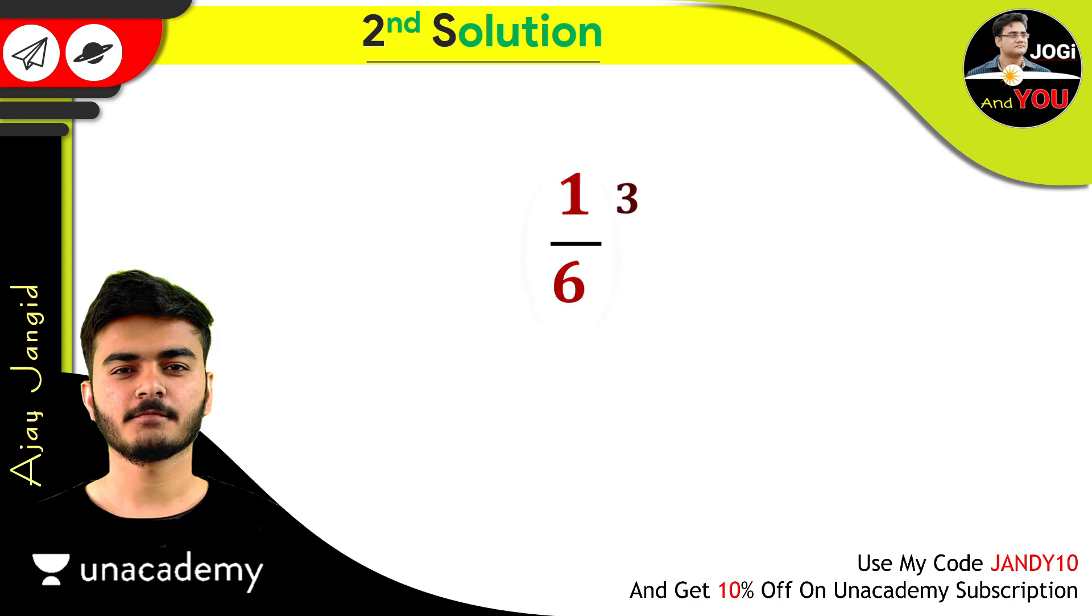Now just solve this. Just like this. 1 upon 6 cube, which is 1 upon 216. And this is the value of this expression. And this is our required answer.